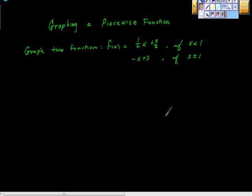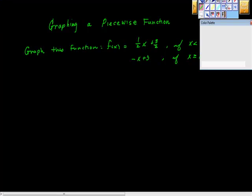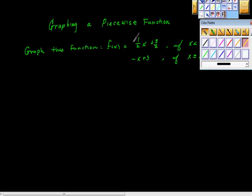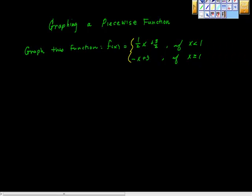Hey boo boo! Let's do this question. Graphing a piecewise function. Graph the function f of x equals one half x plus three halves if x is less than one, negative x plus three if x is greater than or equal to one.